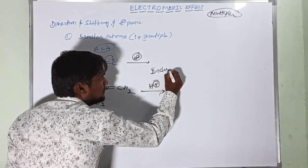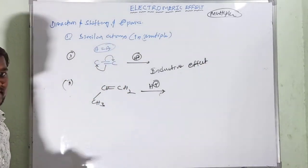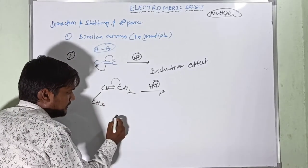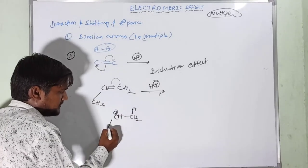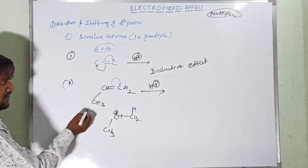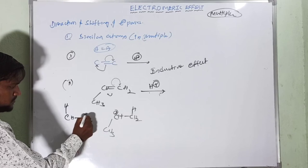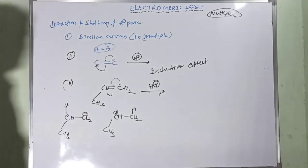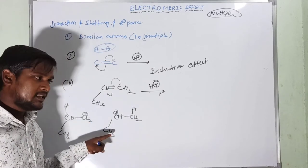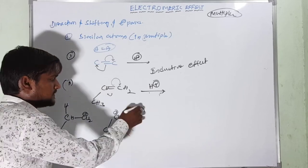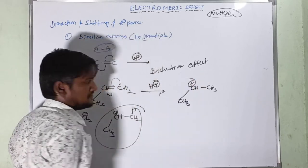Based on the inductive effect, the more stable carbocation side is favored. If electrons shift right: we get CH–CH₂⁻ which abstracts the proton, forming CH₃⁺. If electrons shift left: we get CH₂⁺–CH₃. Among these, the secondary carbocation (CH₂⁺–CH₃) is more stable than the primary, so that direction dominates.